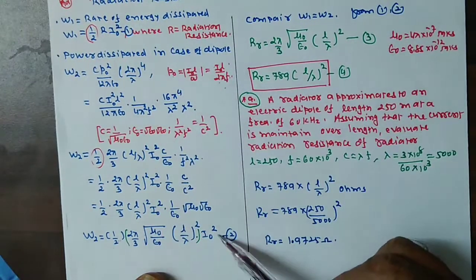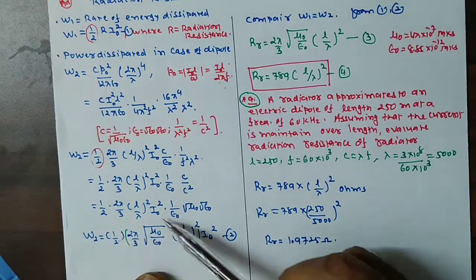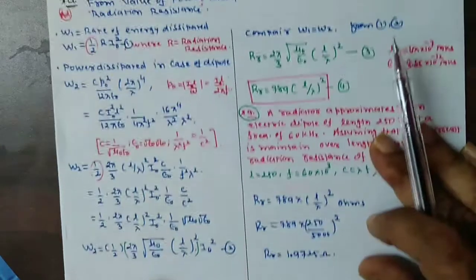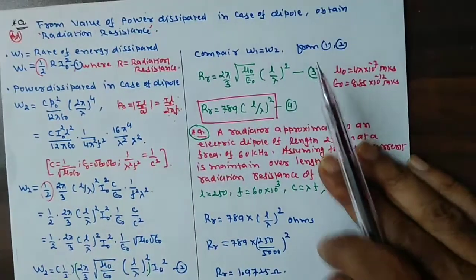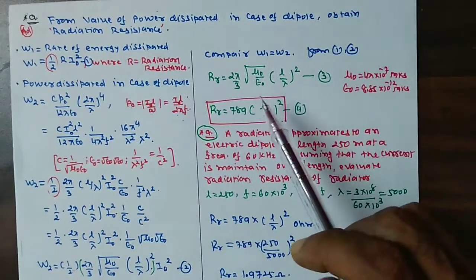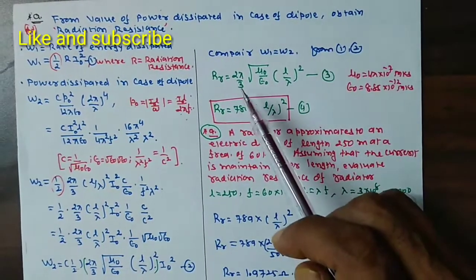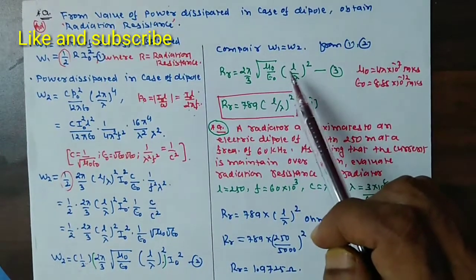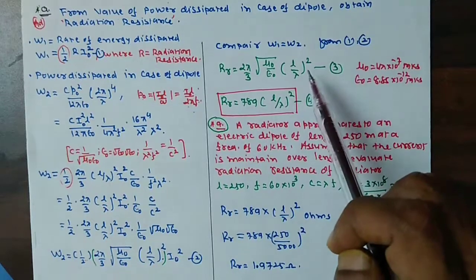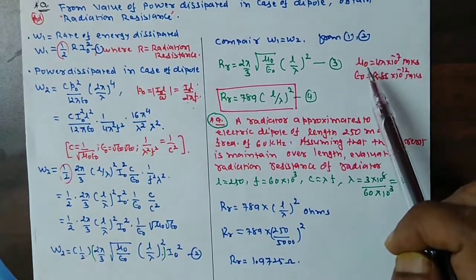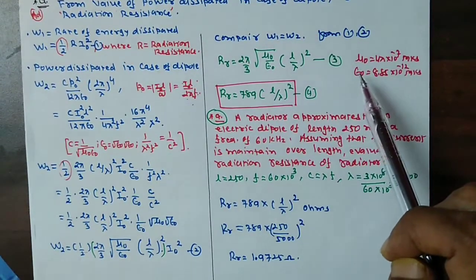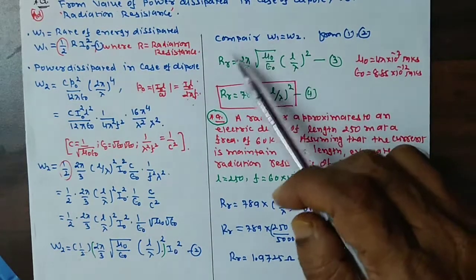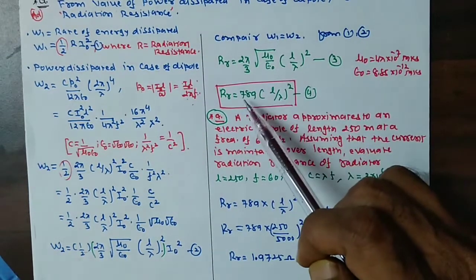So the coefficient value of these two will be the quantity in bracket. It will be called radiation resistance. So you compare W1 equal to W2, radiation resistance of a dipole in our case equal to 2π by 3 square root of μ0 / ε0, L divided by λ square. So what is μ0, permeability, what is ε0, permittivity.